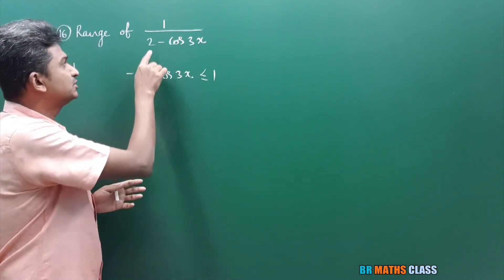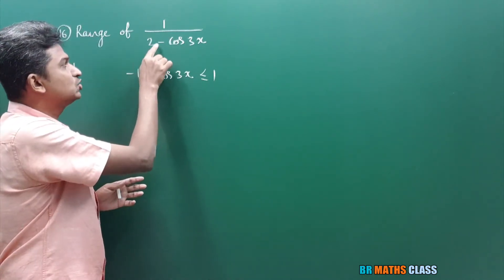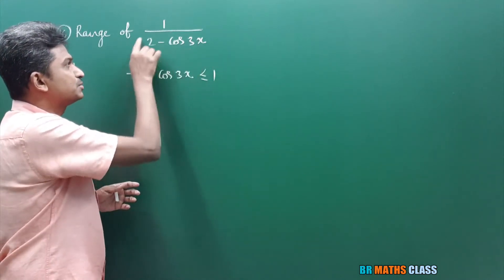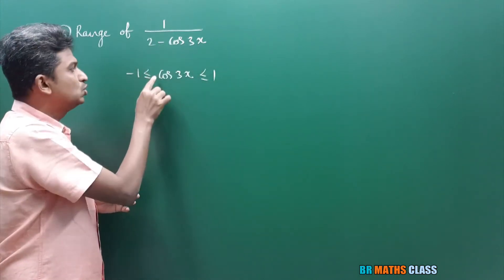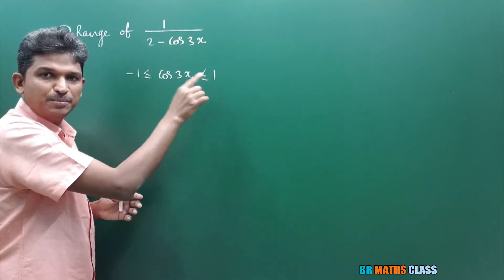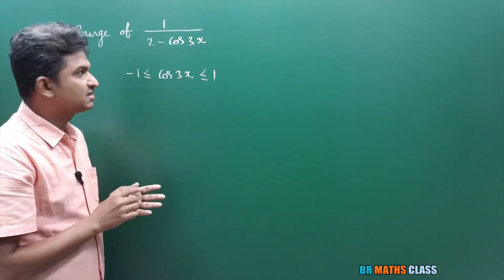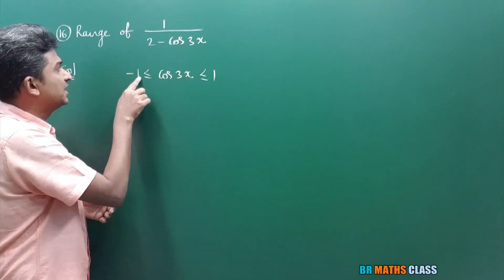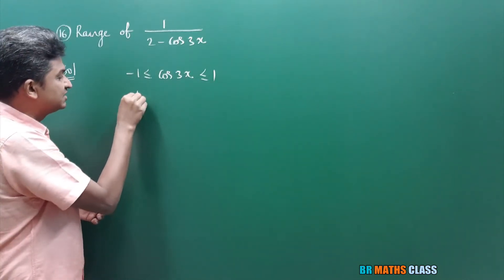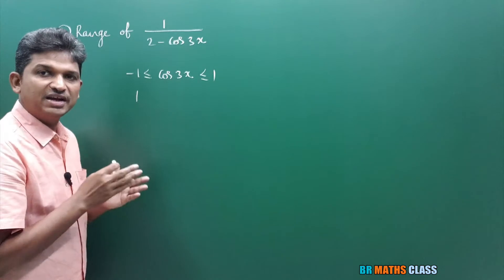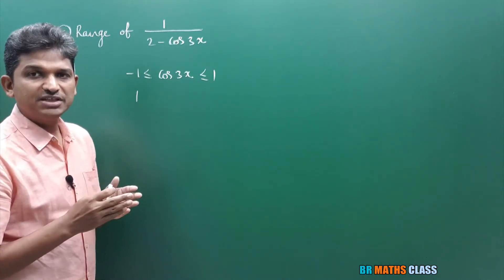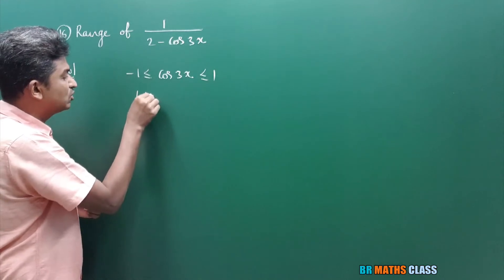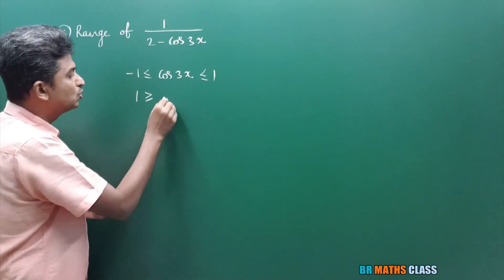I am trying to find which interval 2 minus cos3x lies in, so I will try to get this expression. Since there is a minus sign, to get minus here I will multiply this complete inequality with minus. Minus 1 into minus 1 is plus 1. For an inequality, if you multiply with a negative real number, the inequality sign changes — less than or equal to changes to greater than or equal to. Multiplying with minus: minus cos3x. The inequality changes; less than or equal to changes to greater than or equal to. Minus 1 into 1 is minus 1.